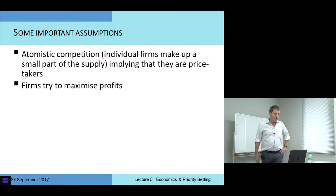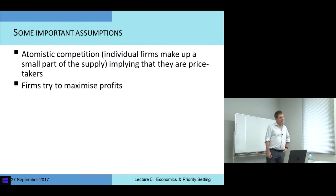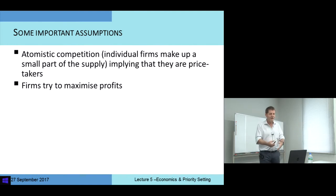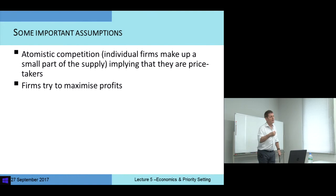Another assumption is that firms are trying to maximize profits. That doesn't seem a very strong assumption, but actually there are other things firms might choose to maximize — they might try to maximize their size, for example, because the owner likes to be on top of a big firm. But generally speaking, we assume there's some profit maximization motive driving decisions.